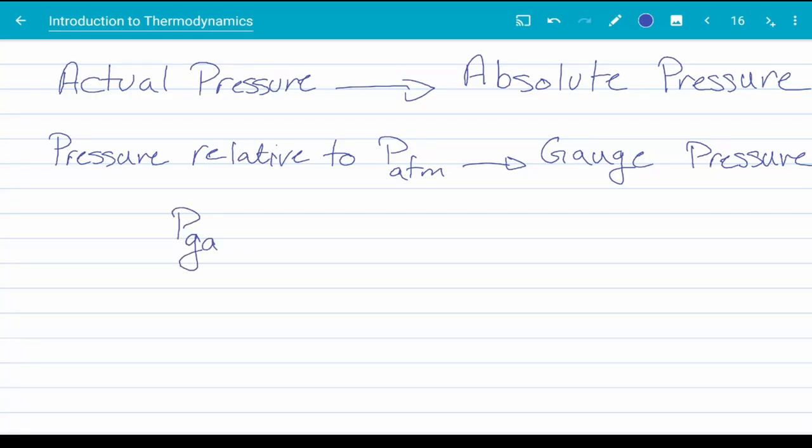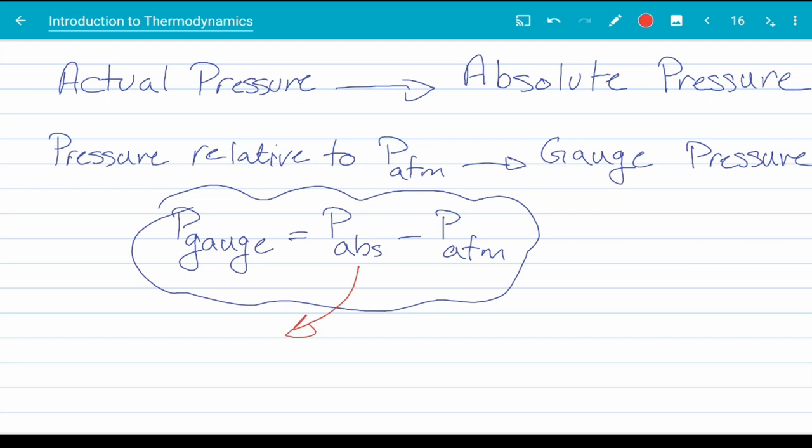So P gauge is P absolute minus P atmosphere. Please take note that in thermodynamics, we are interested in absolute values of pressure only. But most devices read gauge pressure. So you need to convert them together, convert the gauge pressure to absolute pressure.